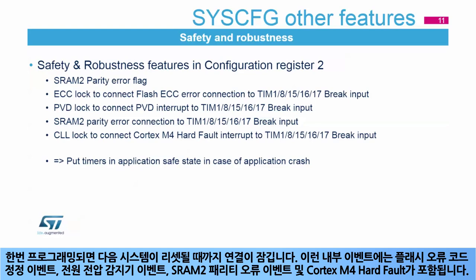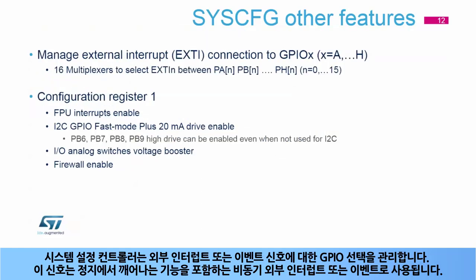These internal events include a flash error code correction event, a power voltage detector event, SRAM2 parity error event, and the Cortex-M4 hard fault. The system configuration controller also manages the selection of the GPIO for the external interrupt or event signal, used as an asynchronous external interrupt or event with wake-up from stop capability.